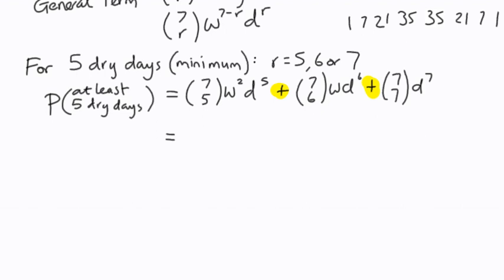And therefore, 7 choose 5, the coefficient is 21. We've got W squared, D to the 5, plus 7, W, D to the 6, and then just plus D to the 7. So that's the probability of it happening.